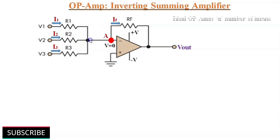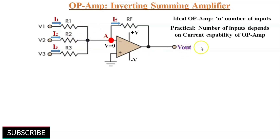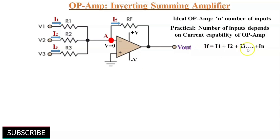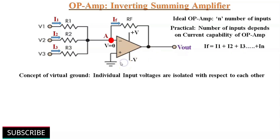Theoretically we can add N number of inputs, but practically the number of input voltages depends upon power dissipation as well as the total current that can be supplied by the op-amp. Because IF equals I1 plus I2 plus I3 and so on up to In, N must not exceed the maximum value supported by the op-amp. One more important fact is that the individual voltage sources are isolated with respect to each other, because of the concept of virtual ground.